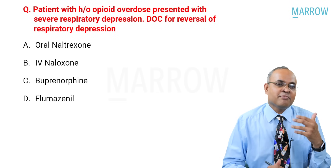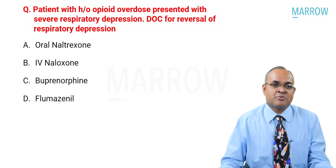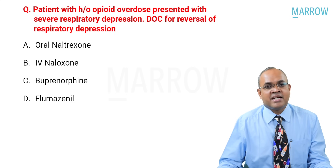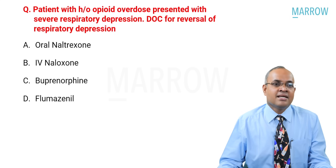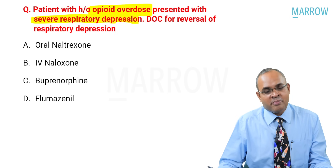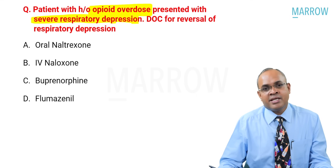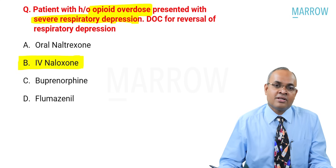A patient came with a history of overdose, presented with severe respiratory depression, and the drug of choice for reversal of respiratory depression is being asked. They are talking about overdose of opioid and the patient is already in severe respiratory depression. The treatment has to be IV naloxone.